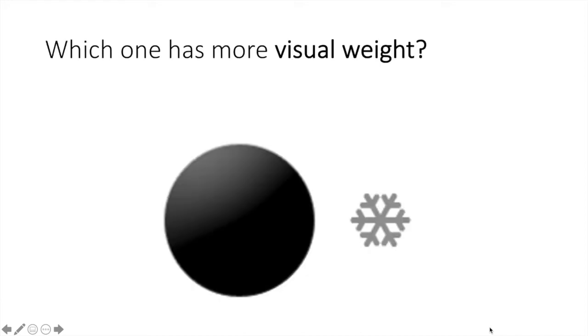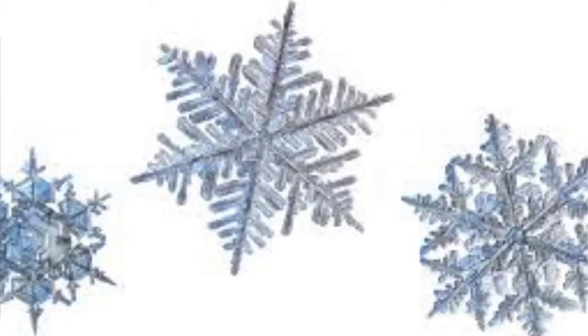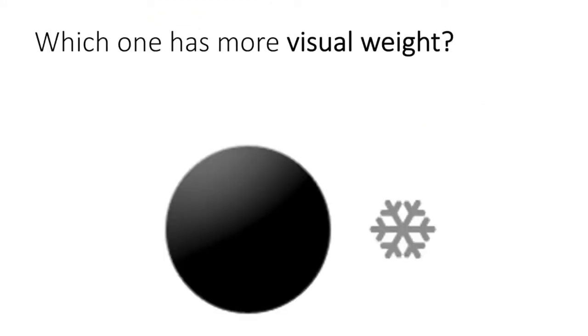So what is visual weight? If I put this picture up here there are two objects — which one has more visual weight? There's no real right or wrong answer. Most people say the one on the left, mainly because it's bigger, darker, or has shading so it looks round. But you could say the other one because it's more complicated, or because one looks like something big and heavy like a bowling ball and the other looks light and fluffy like a snowflake. There are lots of ways of describing visual weight.